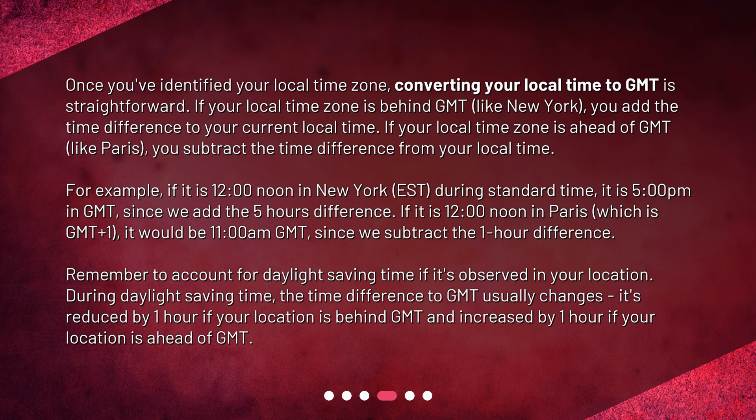If it is 12 o'clock noon in Paris, which is GMT plus 1, it would be 11 a.m. Greenwich Mean Time, since we subtract the 1 hour difference. Remember to account for Daylight Saving Time if it's observed in your location. During Daylight Saving Time, the time difference to GMT usually changes — it's reduced by 1 hour if your location is behind GMT, and increased by 1 hour if your location is ahead of GMT.